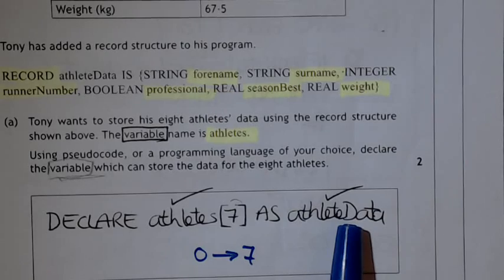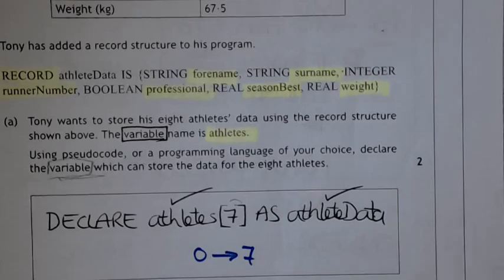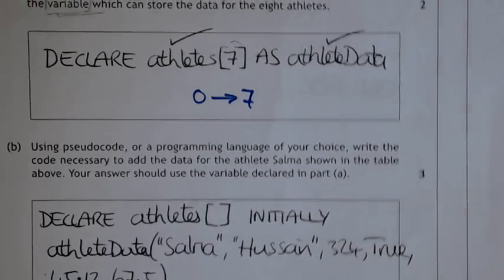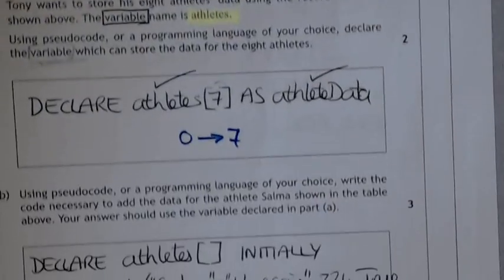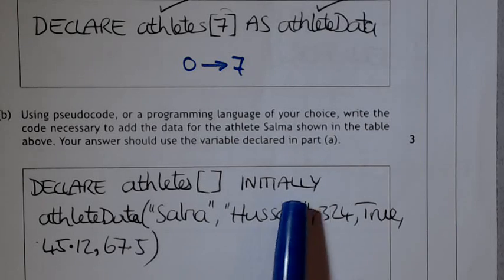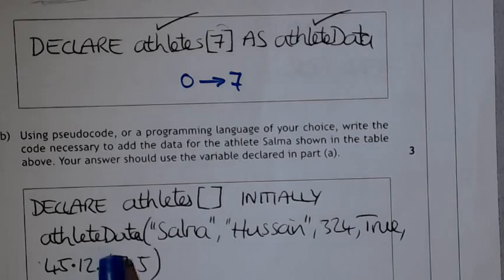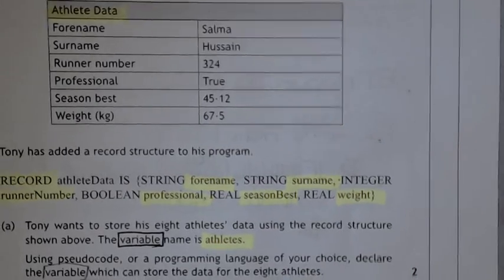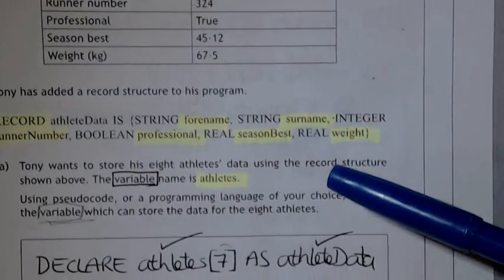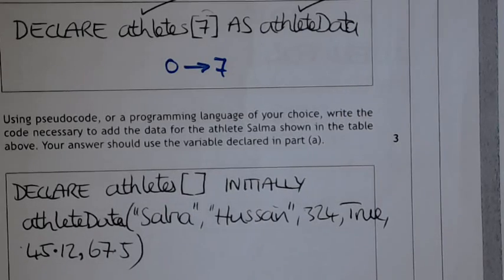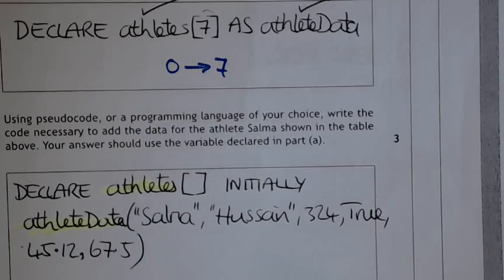So that's given to you, and the two ticks represent where you'd get your marks from. Going further down, they're asking: given the example above, how would you actually declare that? So you would say declare athletes — because that's the variable they're giving you — and you're essentially initialising it, making the record equal to these values. So you'd say athlete data, and then write down the data relating to the information held within each record. It's something you just practice — work through a few examples, and you could even make your own example record and fill in the answers. It's just about getting the right structure.